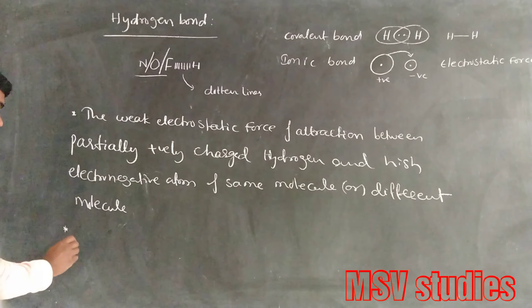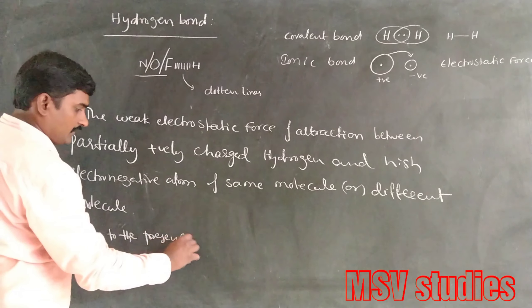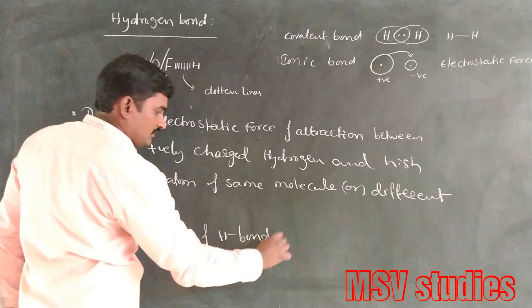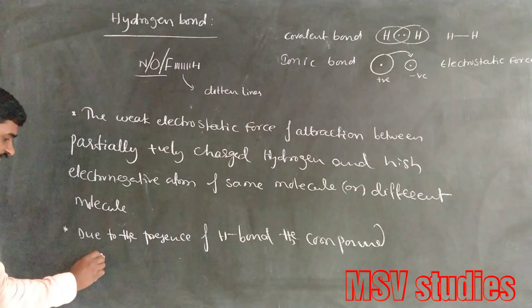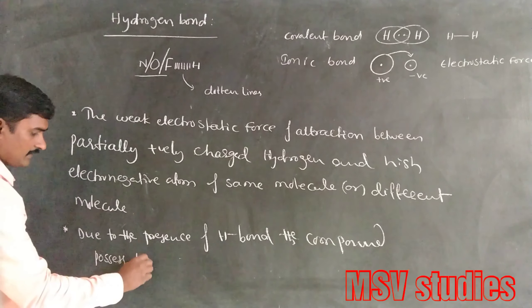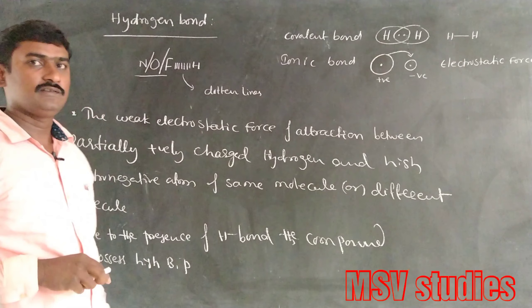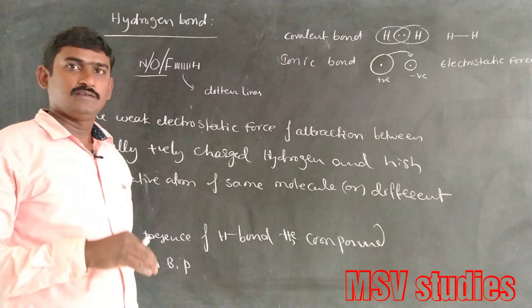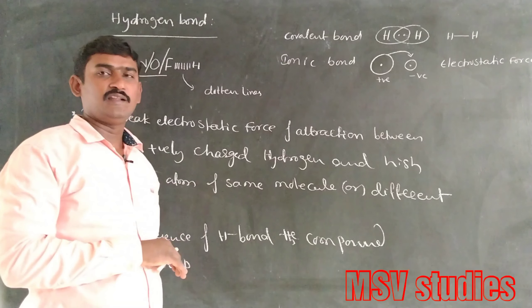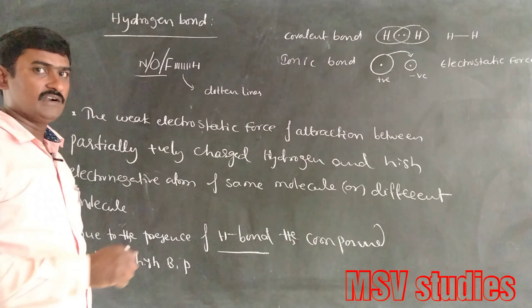Due to the presence of hydrogen bonds, the compound possesses a high boiling point. For example, water boils at 100 degrees centigrade while alcohol boils at around 60 degrees centigrade, which is less than 100. This difference is due to the presence of hydrogen bonds in alcohol molecules and water molecules.